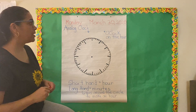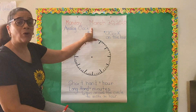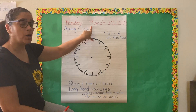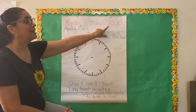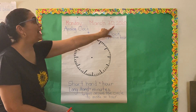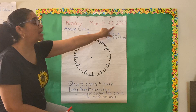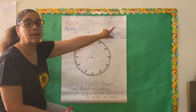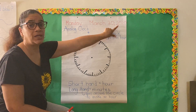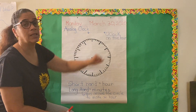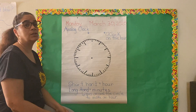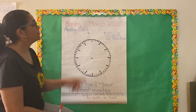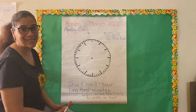Remember that when we are writing the date, we have the month — March — the date, 30, and this little guy here is what we call a comma. It separates the date from the year. And our year is 2020. So that's the day, Monday, and that's the date.